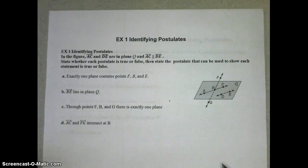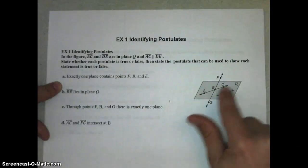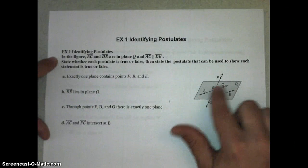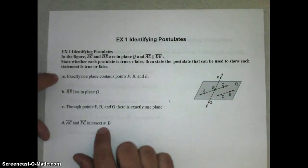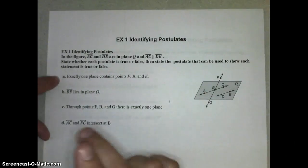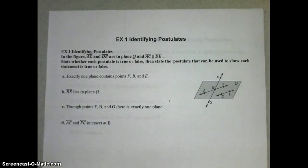And we're going to use those to help us justify some statements here. So let's look at example 1A. In this figure, we're told that AC and DE are in plane Q and they're parallel. So we should be able to state whether each of these postulates is true or false, and identify that postulate from your list that makes them true or false.